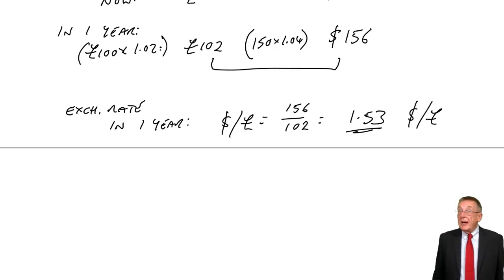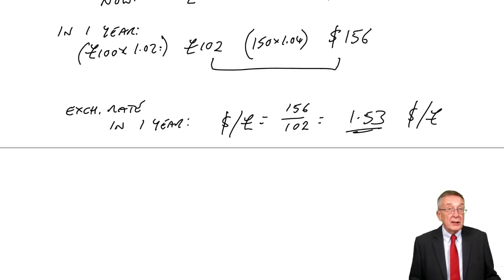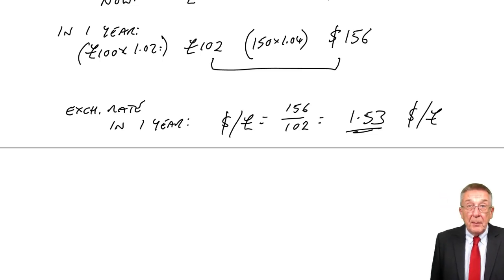The exchange rate will be 1.53 dollars to the pound. So a pound will be buying more dollars, which means the pound is stronger, or if you prefer, the dollar is weaker.